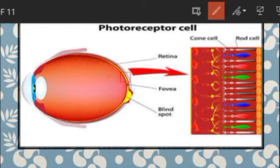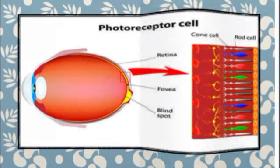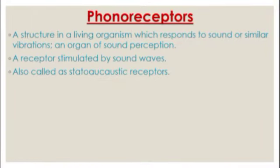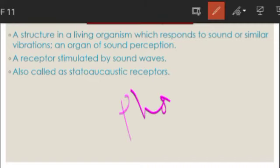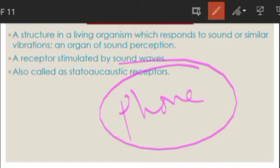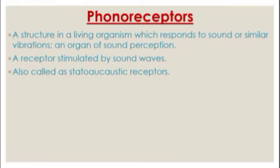'Photo' means image and 'receptor' means image receiving. So photoreceptors are the image-receiving organs. Now, phonoreceptors — what can we conclude from the name 'phono'? We use the phone for talking, speaking, and listening, which means producing and receiving sound. From that, this name is suggested: phonoreceptors are related to the sense of hearing.